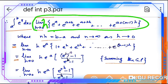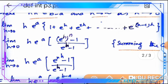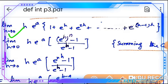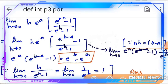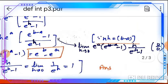We calculate the limit as h tends to 0 of h into e^a times [1 + e^h + e^(2h) + ... + e^((n-1)h)]. This is a geometric progression. We calculate this value: limit h tends to 0 of h · e^a · [e^(nh) − 1] / [e^h − 1]. Simplifying, and substituting nh = b − a, this becomes: limit of h · e^a · [e^(b−a) − 1] / [e^h − 1].